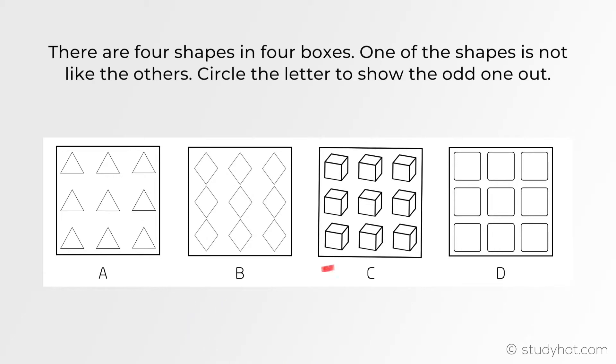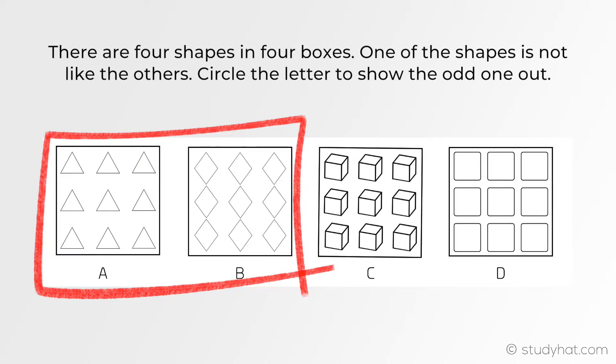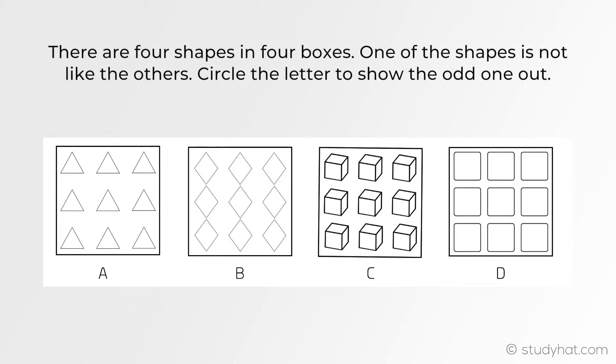You also might be able to spot that A and B are a similar pair because they both are 2D shapes and have nine shapes inside of it. What we can do is cross those two off as they can't be the odd one out. If I then look at C I can immediately tell that it has 3D shapes within the figure which is different to A, B and D, therefore resulting in it being the odd one out.